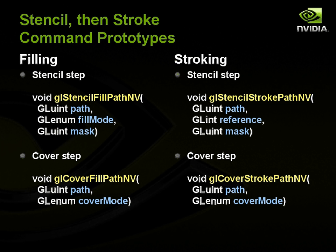Here are the prototypes for doing filling and stroking. In the stencil step, you'd call gl-stencil-fill-path-nv, pass in the name of a path object you have created, a fill mode that says how to do the filling, and a mask that says which bits of the stencil buffer to update. The cover step is really simple — you just specify the same path object and give a cover mode. Stroking is pretty much the same, except when you stencil you also give a reference stencil value and a bit mask for updating the stencil values.